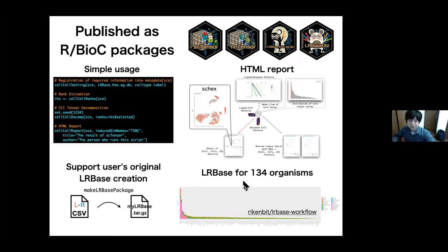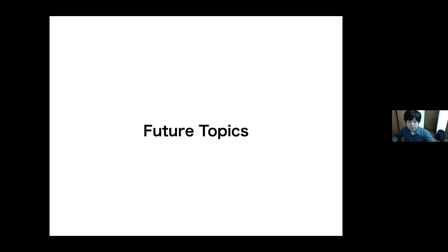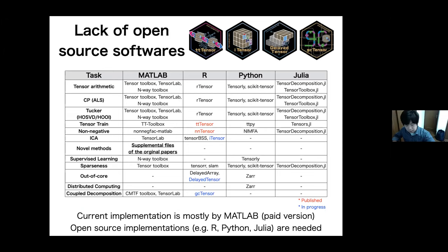Finally, I will talk about future topics of tensor data analysis. If we want to use tensor decomposition, we can use major methods such as CP or Tucker at present, but if we want more specific algorithms or more sophisticated implementation, there are only a few ready-to-use software. This is because in most cases, novel tensor decomposition methods are implemented as MATLAB source codes or toolbox, and that's why we have to develop such methods by open source languages such as R, Python, or Julia. I'm developing some parts and providing other packages.